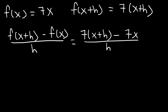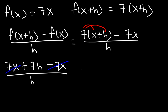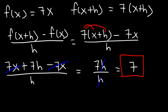Now we need to distribute 7 to x plus h. So 7 times x is 7x, and 7 times h gives us plus 7h, and then minus the 7x that was already there. So 7x minus 7x cancels, leaving 7h divided by h. And h divided by h is 1, so they cancel leaving behind 7. The difference quotient of 7x is 7.